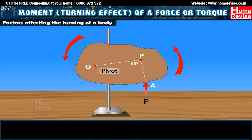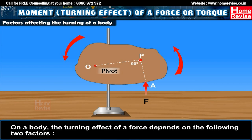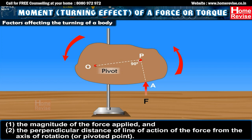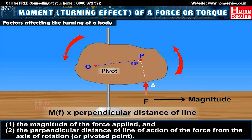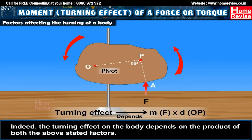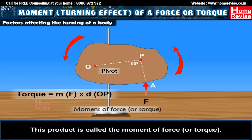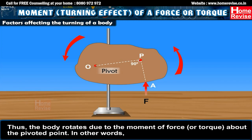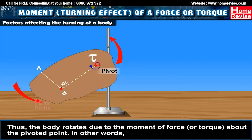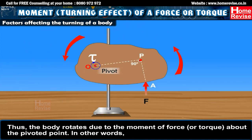Factors affecting the turning of a body: The turning effect of a force depends on the following two factors. One, the magnitude of the force applied. And two, the perpendicular distance of the line of action of the force from the axis of rotation or pivoted point. The turning effect of the body depends on the product of both these factors. This product is called the moment of force or torque. Thus, the body rotates due to the moment of force or torque about the pivoted point.